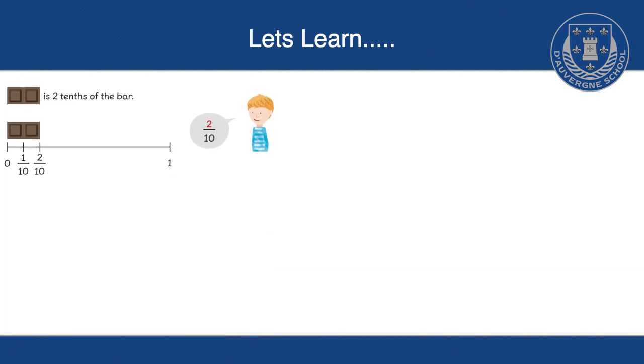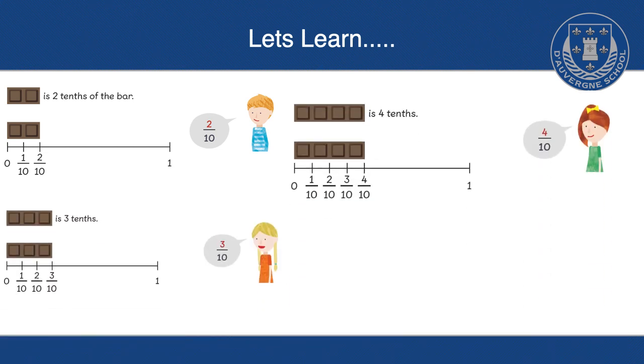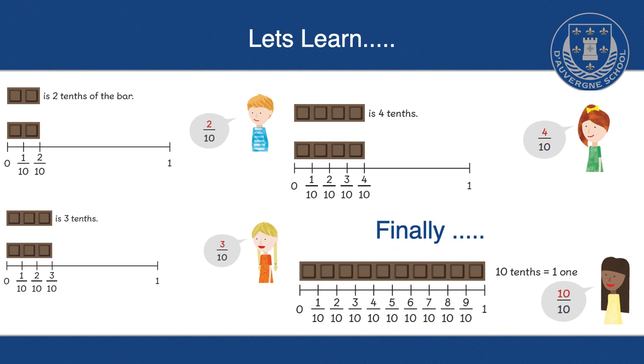And we carry on. So two parts of the chocolate bar would become two-tenths, and that's how you'd write it, like Sam shows. Two, and then a line, and then ten underneath. Because the parts don't alter. There's always going to be ten, ten equal pieces, or ten parts of the chocolate bar. And then there's three-tenths, four-tenths, and finally, there is ten-tenths.